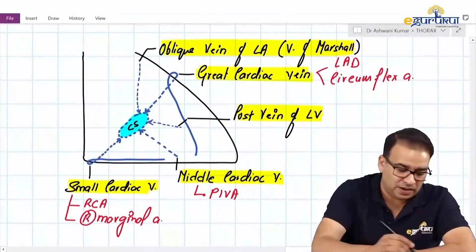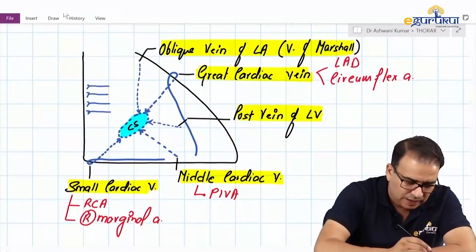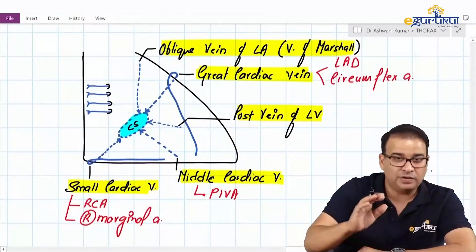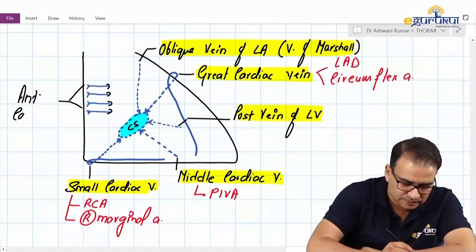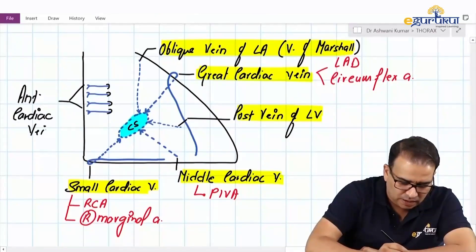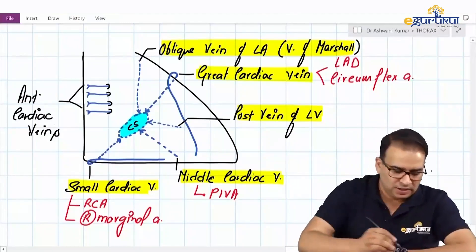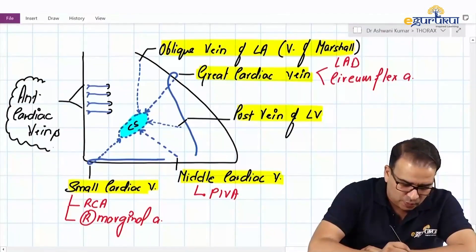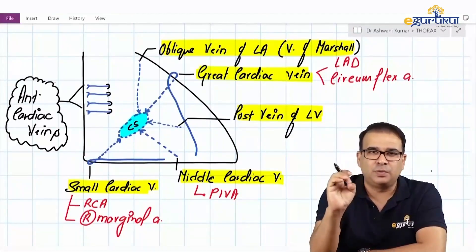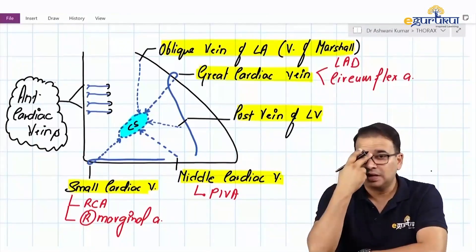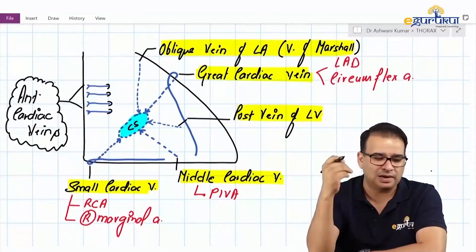These veins that open directly onto the anterior wall of the right atrium are called anterior cardiac veins. They are not the same as the Thebesian veins, which open on the posterior wall. The anterior cardiac veins open on the anterior wall and are not tributaries of the coronary sinus — this distinction is frequently tested. The exam question may ask: which of the following is not a tributary of the coronary sinus? The answer is the anterior cardiac vein.